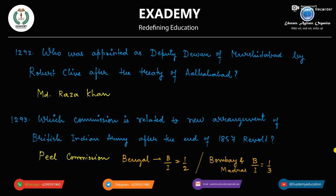Who was appointed as Deputy Diwan of Murshidabad by Robert Clive after the Treaty of Allahabad? Treaty of Allahabad ke baad, Murshidabad ka Deputy Diwan kisko banaya gaya Robert Clive ke appointment ke through? Muhammad Raza Khan.